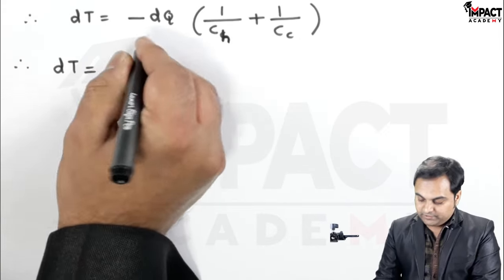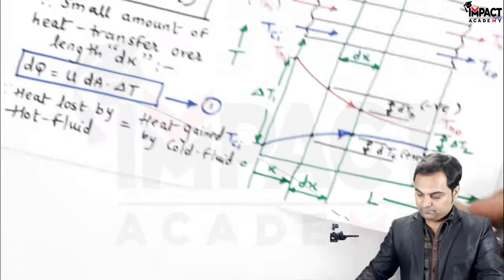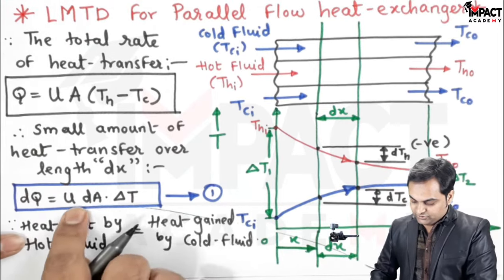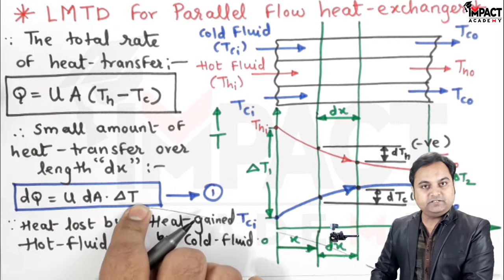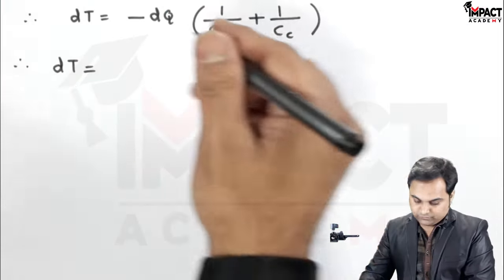From equation one, DQ can be written as U·DA·delta T, so substituting: dT equals minus U·DA·delta T into (1 upon CH plus 1 upon CC).